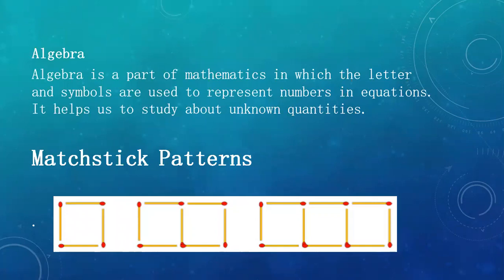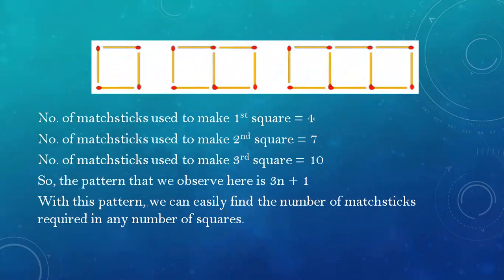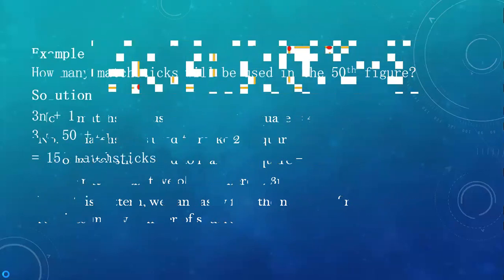The first problem we are going to discuss in algebra is matchstick patterns. If we observe this diagram, there are squares made by matchsticks. The number of matchsticks used to make the first square is 4, the second square is 7, and the third square is 10. The pattern we observe follows the rule 3n plus 1. With this pattern, we can easily find the number of matchsticks required in any figure.